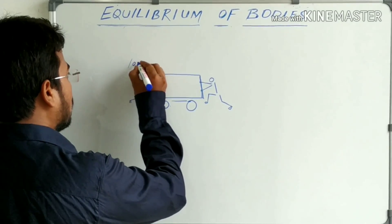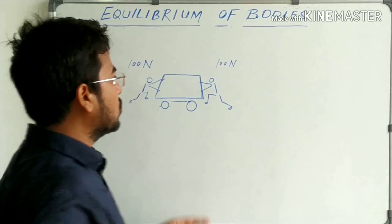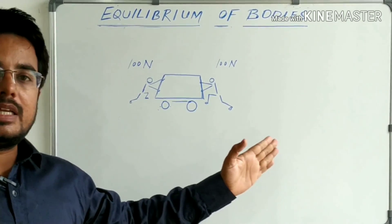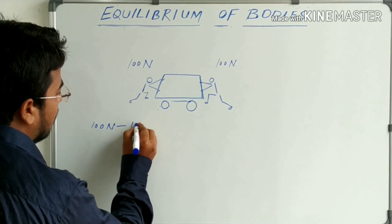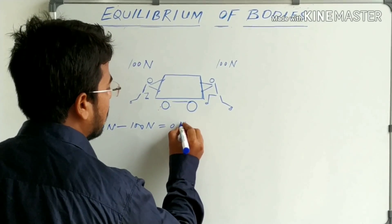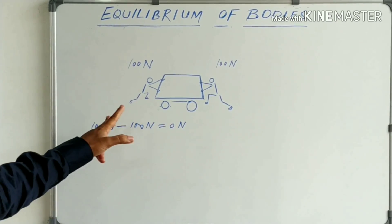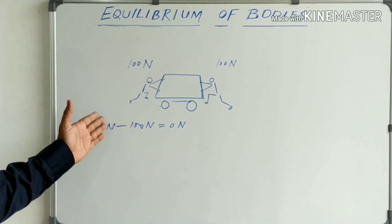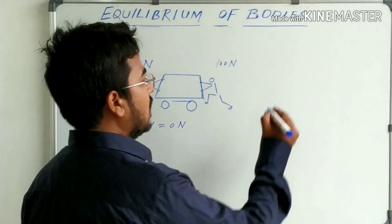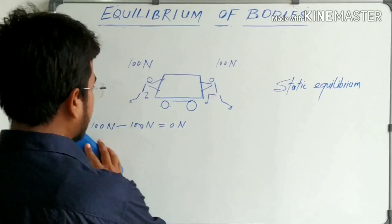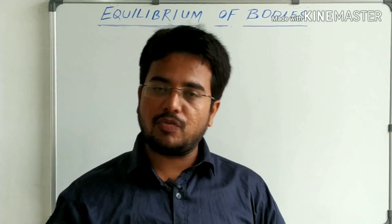For illustration, suppose one man is pushing with a force of 100 newtons and another man is also applying a force of 100 newtons, but they are pushing the cart in opposite directions. So the resultant of these two forces will be 100 minus 100 equals 0 newtons. The cart is not moving and forces are being applied from opposite sides. Under the influence of these forces, the cart is in a state of static equilibrium.